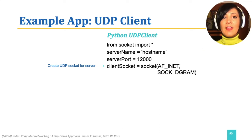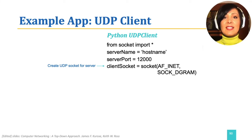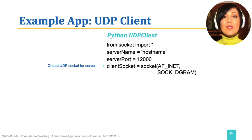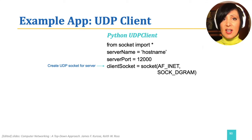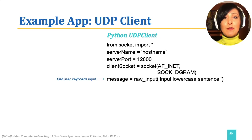Then the UDP socket is created. AF_INET defines the address family used, which is IPv4, and SOCK_DGRAM defines that this socket is a UDP socket. Then the message is received from the user by keyboard input.